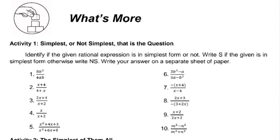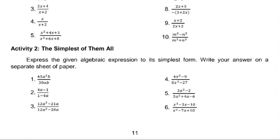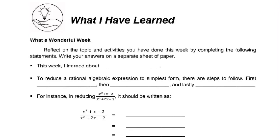What's more — Activity 1: Simplest or Not Simplest? That is the question. Identify if the given rational expression is in simplest form or not. Write S if the given is in simplest form; otherwise write NS. Then Activity 2: The Simplest of Them All. Express the given algebraic expressions to their simplest form. Write your answers on a separate sheet of paper. Apply what you have learned from our discussion.